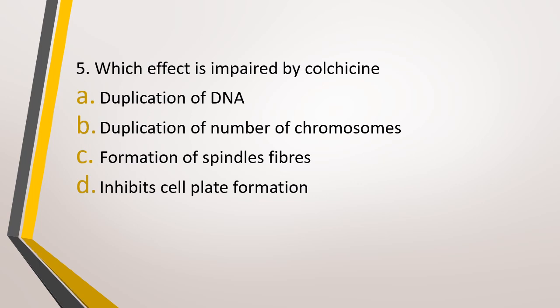Question number 5. Which effect is impaired by colchicine? Option A: Duplication of DNA, option B: Duplication of number of chromosomes, option C: Formation of spindle fibers, option D: Inhibits cell plate formation. The correct answer is option B, that is it inhibits duplication of number of chromosomes.